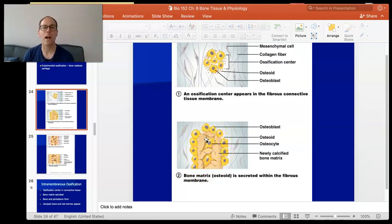Some of these osteoblasts get trapped. When they get trapped by the bone matrix, they mature, they become mature bone cells. They become osteocytes at that point. That's how we get the osteocytes inside these flat bones.